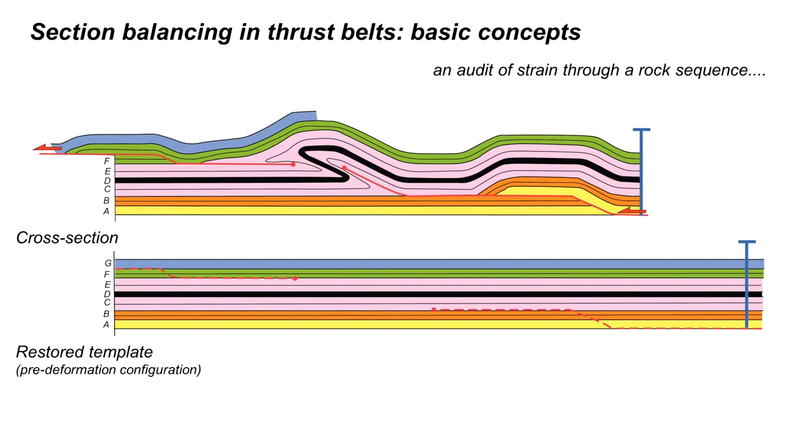So that is a quick introduction to the theoretical basis behind section balancing in thrust belts. Section balancing is an audit of strain through a rock sequence. We started off looking at simple approaches where bed length or line length is conserved during the deformation but that requires concentric folding and fault slip alone.